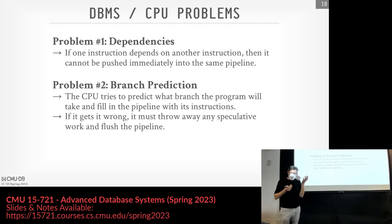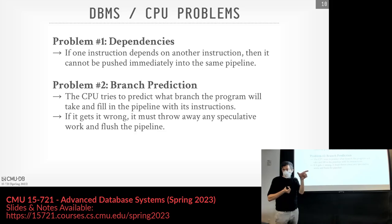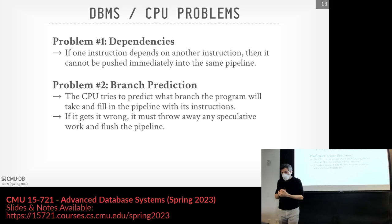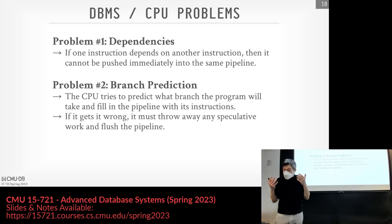Everything is great with out-of-order execution until there's a problem — until it gets it wrong. This can occur in basically two ways. One is if there's a dependency between instructions — if the output of one instruction is used as the input for the next, you can't do out-of-order execution because you have to wait to see what the output is. There's no easy way for a database system designer to avoid this. The second problem is branch misprediction — the CPU tries to predict which path through a conditional, and if it gets it wrong it has to flush the pipeline and start again. That filling the pipeline is expensive. We're talking nanoseconds, but if you're doing this for a billion tuples over and over during a scan, this becomes very expensive — the CPU can run 3x slower than it should.